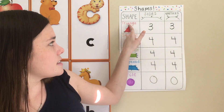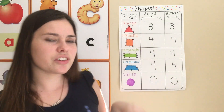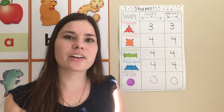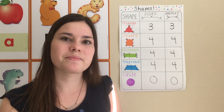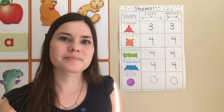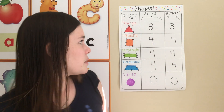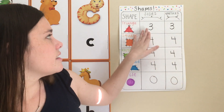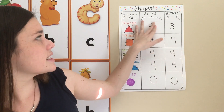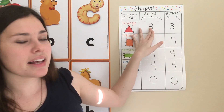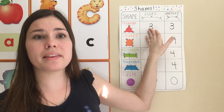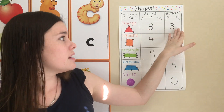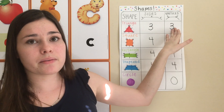So we looked at how many sides and vertices they have, and who remembers the pattern we found? Exactly — we said that how many sides a shape has will always be the same as the number of vertices.